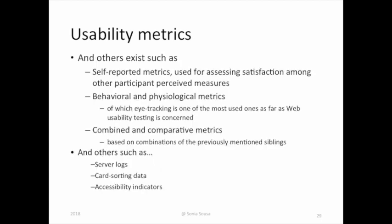Finally, as a last resource, I would like to explain additional metrics that we also use to test usability. They are called self-report metrics, and they usually help to assess the satisfaction of the user on how they perceive your product. We also have some behavioral and psychological metrics such as eye tracking, which we are going to learn in the next session. Or we can also compare and combine designs — we call it A/B testing — based on combinations of previous designs.